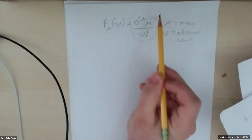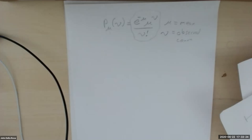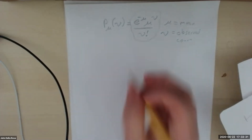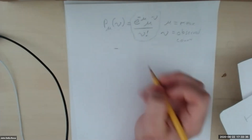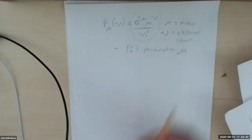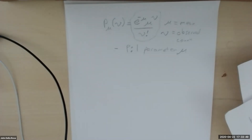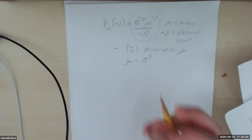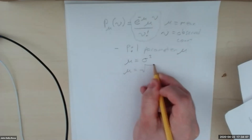The formula is P_mu(nu) equals e to the negative mu times mu to the nu over nu-factorial. For the Poisson distribution, one parameter defines it: the mean. Unlike the Gaussian, where mean and variance can vary independently, for the Poisson distribution the variance equals the mean, or equivalently the standard deviation equals the square root of the mean.